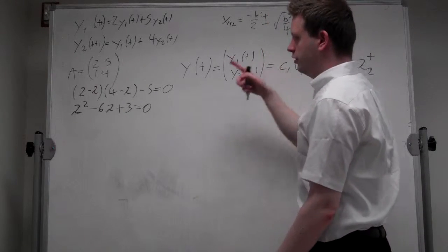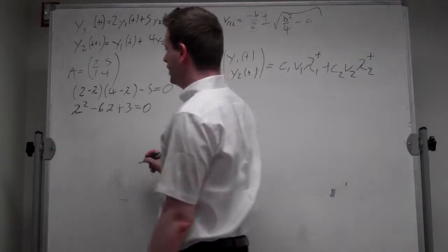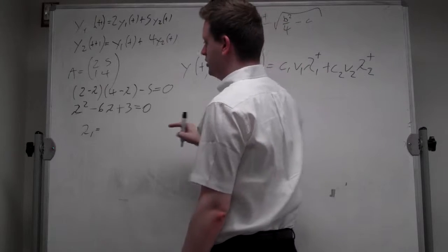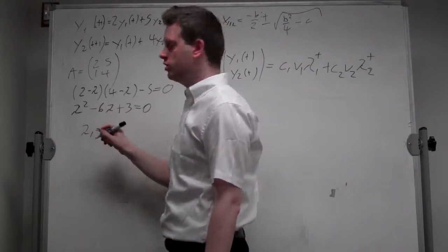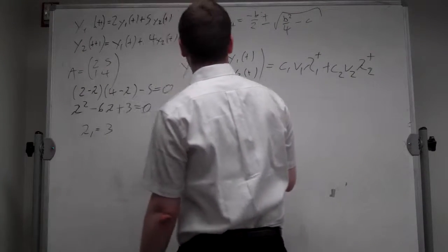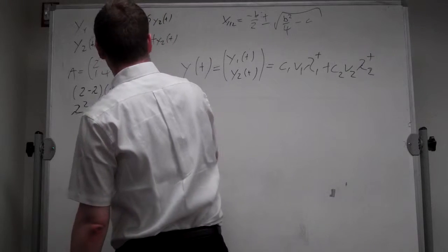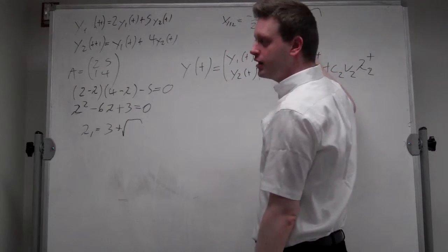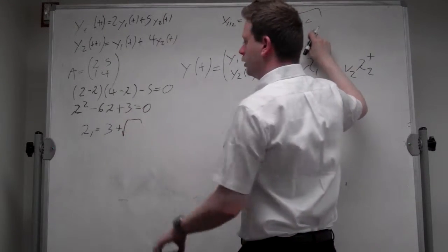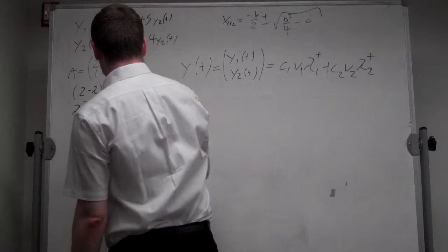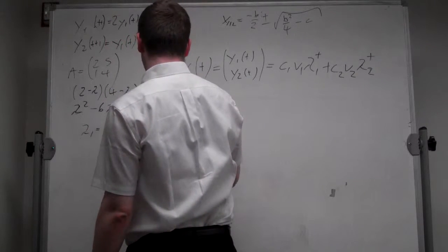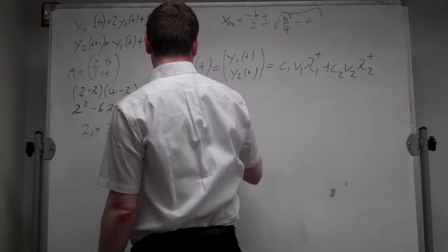Okay? Now if we apply this formula here, what we get is lambda_1 is the plus sign. So minus b half is 3, plus the square root b squared is 36, divided by 4 is 9, minus 3 is 6. So square root of 6, and lambda_2 will be equal to 3 minus square root of 6.